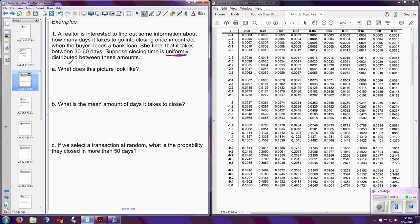So let's go ahead and look at an example here. A realtor is interested to find out some information about how many days it takes to go into closing once in contract if a bank loan is needed. She finds it takes between 30 and 60 days. Suppose the closing time is uniformly distributed. Now the only reason we are allowed to use the uniform distribution is because they're specifying here that this is a uniform distribution.